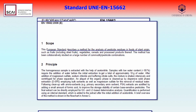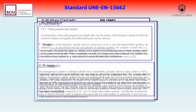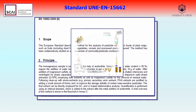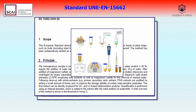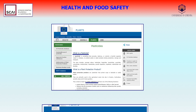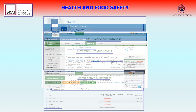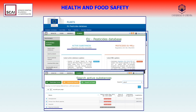The European standard describes a method for analysis of pesticide residues in foods of plant origin by using the QuEChERS extraction and purification method — rapid, easy, cheap, effective, rugged, and safe. The European Commission defines both the pesticides and the active substances that may be present in food, their legal limits or MRLs (maximum residue levels), and the search for such limits can be performed from the analytical results obtained.